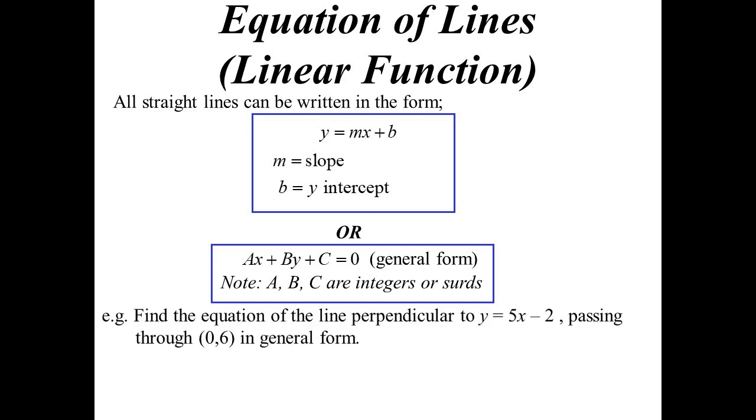Find the equation of the line perpendicular to y equals 5x minus 2 and it passes through 0,6 and they want it in general form.